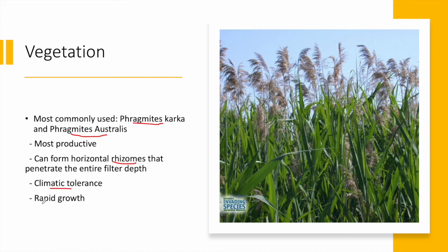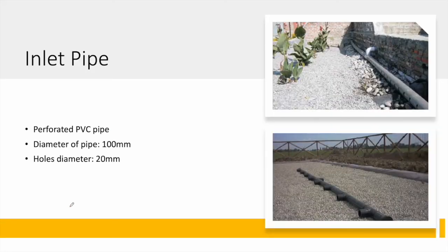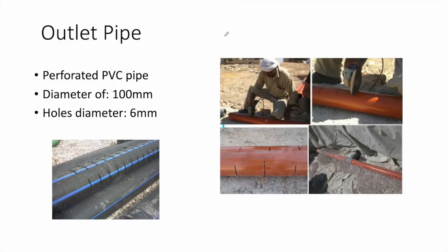The inlet pipe must be perforated with perforation diameters of 20 millimeters, and the pipe diameter is 100 millimeters, placed under the coarse gravel layer. The outlet pipe also has a diameter of 100 millimeters but is perforated with smaller holes of 6 millimeters diameter.